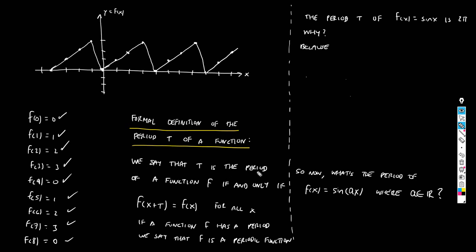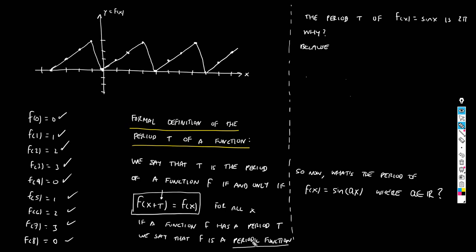The formal definition: T is the period of a function f if and only if f(x + T) = f(x) for all x. If a function f has a period T, we say that f is a periodic function. So a periodic function is one that has a period, and a period is a number T for which f(x + T) = f(x).